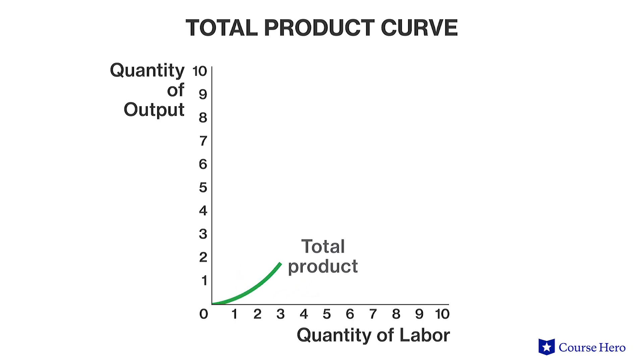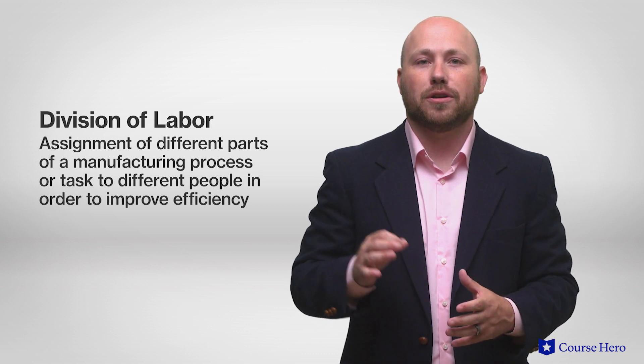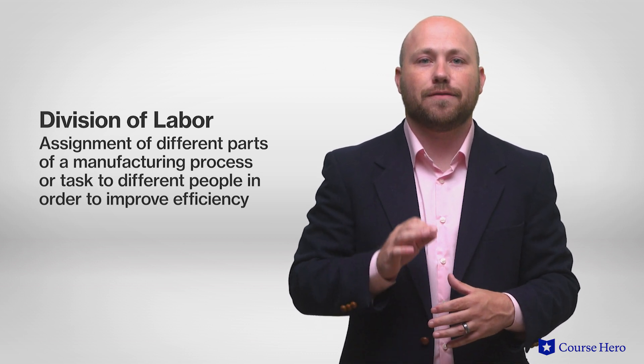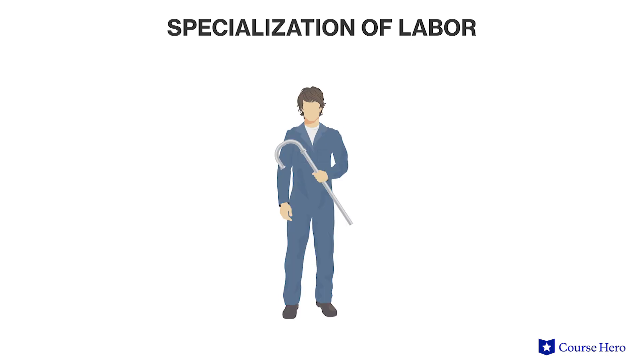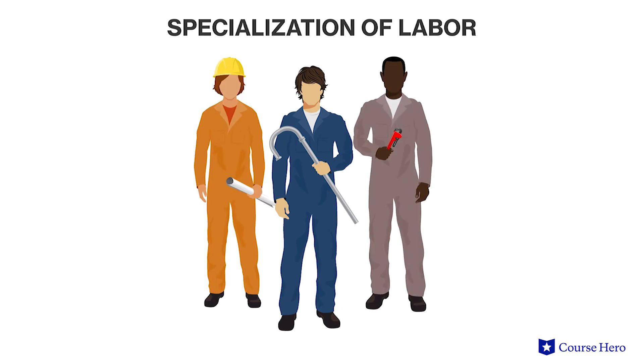As more labor is added, output typically increases at an increasing rate, so the curve becomes steeper. For example, if one worker is hired, he or she will be doing everything, so production may be inefficient. Without other workers, the firm isn't able to capitalize on a division of labor — the assignment of different parts of a manufacturing process to different people in order to improve efficiency. If there's no division of labor, there's no possibility of specialization of labor, and the worker wastes time turning from one task to another. As a second and then a third worker are added, there will be enough workers to specialize so that each does what he or she is best at and does not waste time switching between tasks.